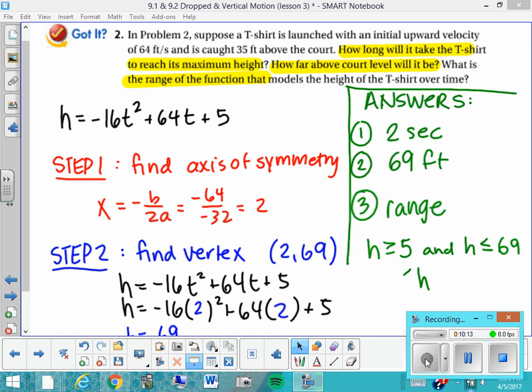So that's how you could write the range. I'd prefer to write it in compact form where you say greater than or equal to 5 and less than or equal to 69 feet in this way. Okay, that's it. I will see you in class tomorrow. Thanks.